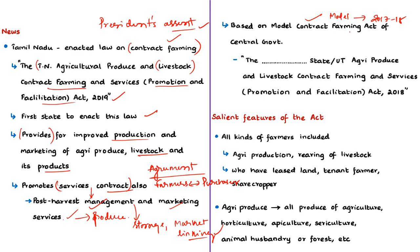The model act is named the respective State or Union Territory Agriculture Produce and Livestock Contract Farming and Services Promotion and Facilitation Act 2018. Under the state legislation, the ambit of 'farmer' is extended to all kinds of farmers. A farmer means a person engaged in production of agriculture produce or rearing of livestock by himself, by hired labour, or otherwise.